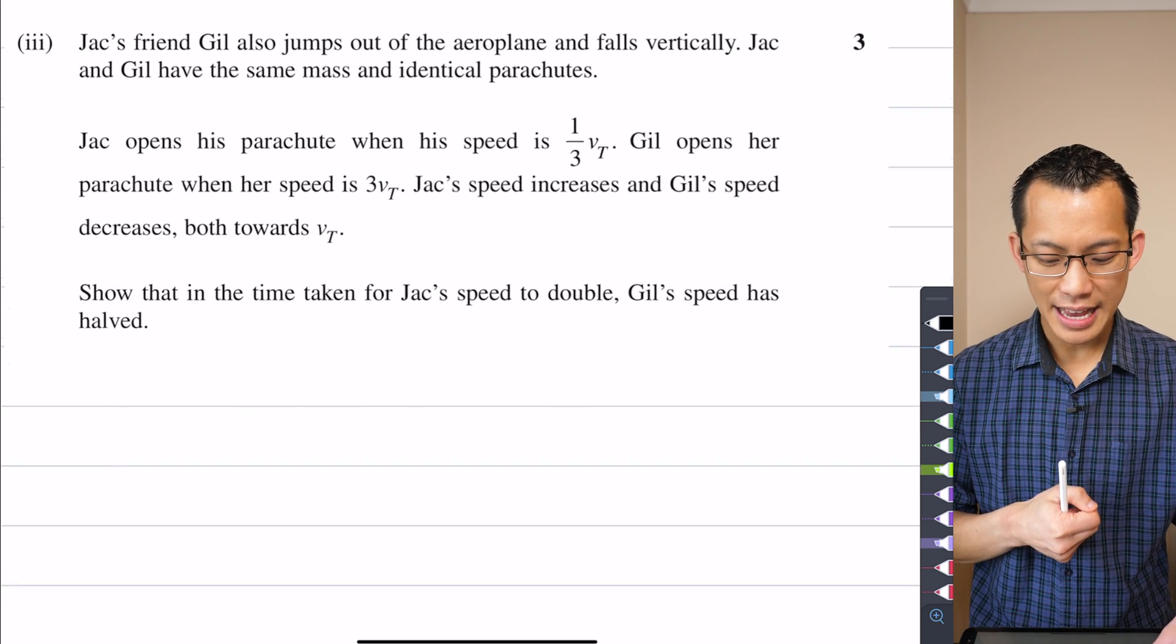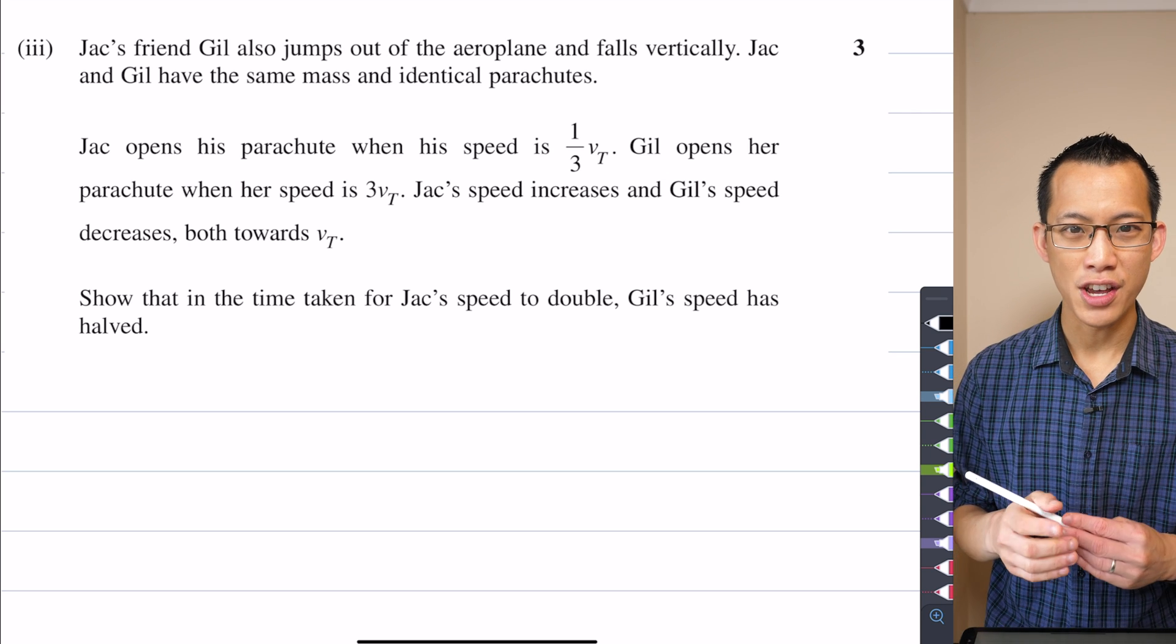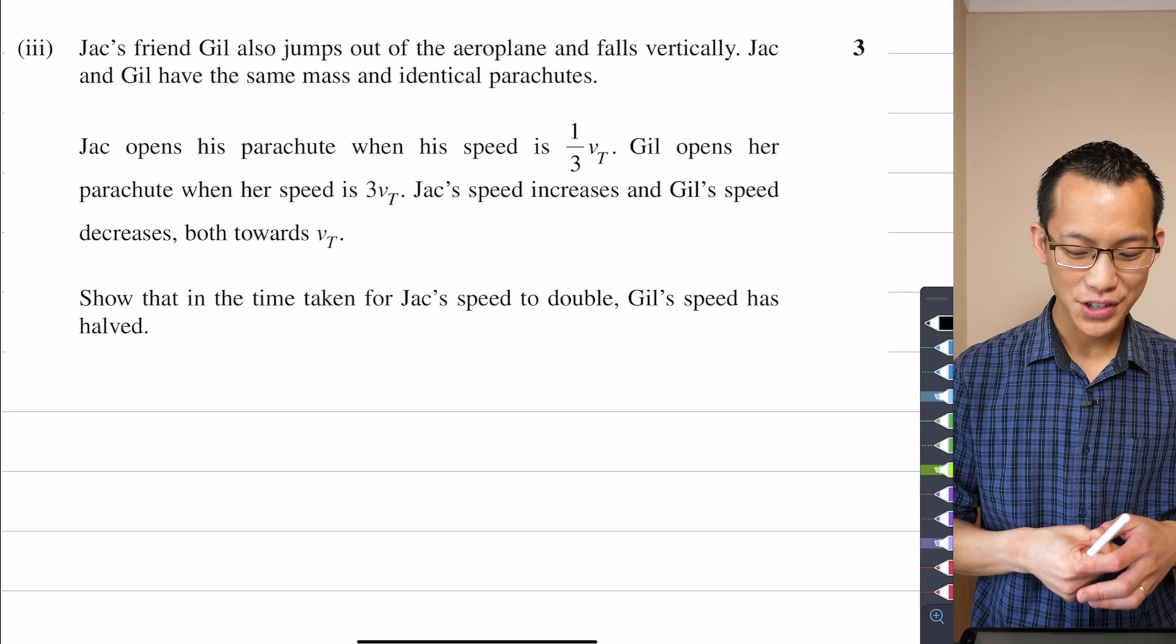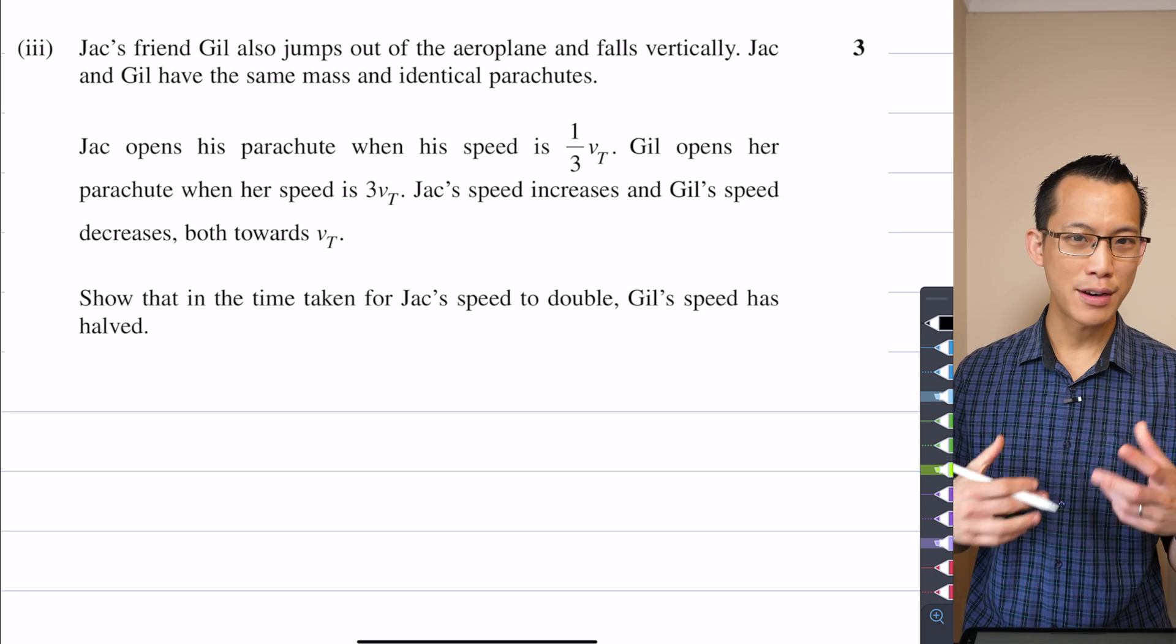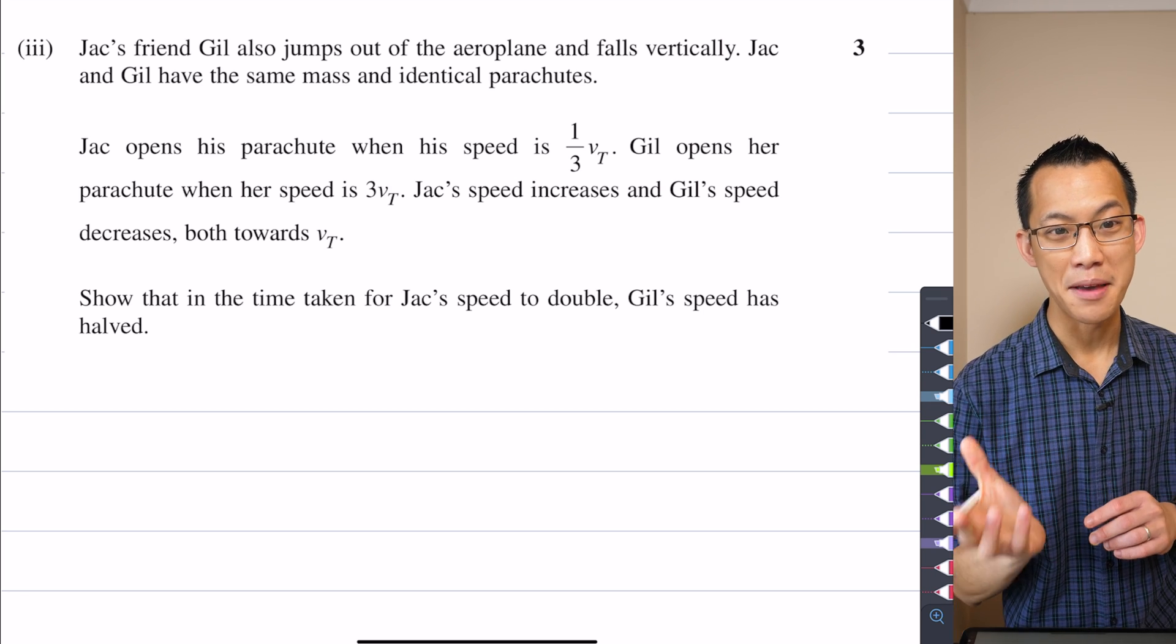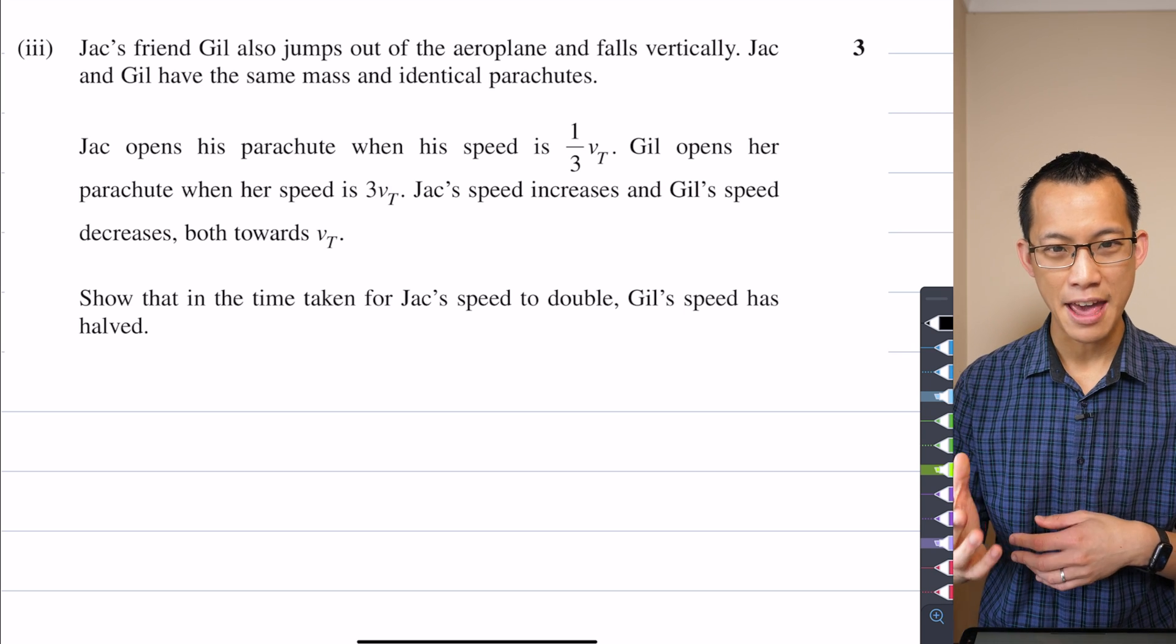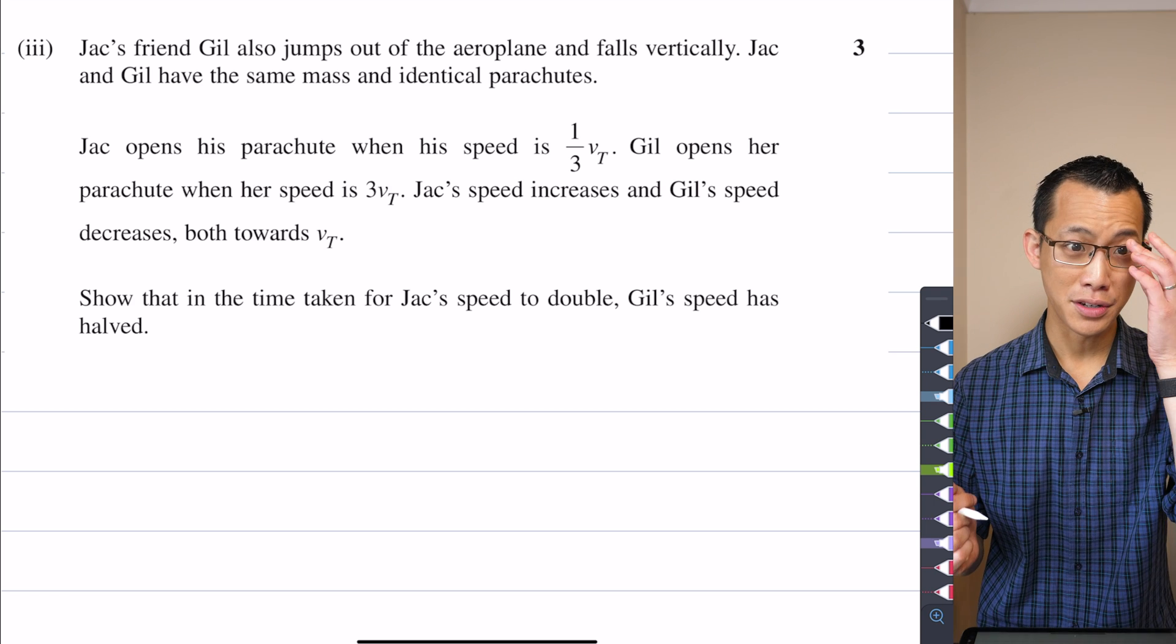So let's have a look at the situation. This is exactly what I was just kind of flagging earlier in terms of that when you pull the parachute, you've got Jack and Jill. Jill also jumps out of the airplane and her situation is exactly the same in terms of they have the same mass, their parachutes are the same, so all your constant of proportionality in your M, we're going to have the same situation essentially,